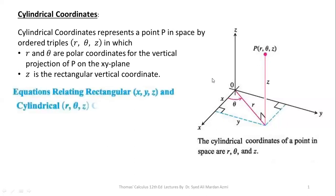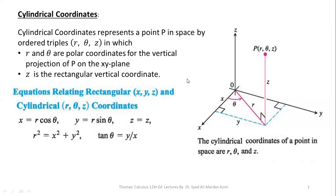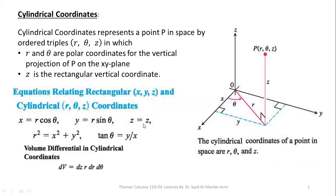After learning the basic terms about the cylindrical coordinate system, we will learn the transformation equations between cylindrical and rectangular coordinate systems. X is equal to R cos theta, Y is equal to R sin theta — these are the transformation equations for polar coordinates. R squared equals X squared plus Y squared, and tan theta equals Y over X, or theta equals tan inverse of Y over X, are the reverse transformation equations. For the third axis, Z equals Z. The volume differential in cylindrical coordinates is dZ r dr dθ.